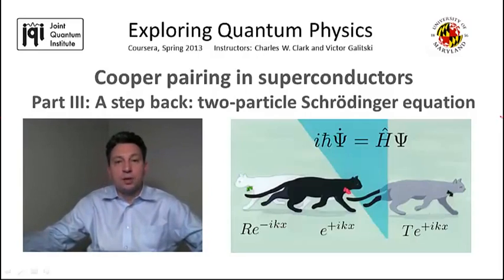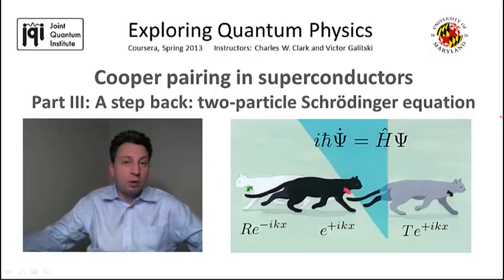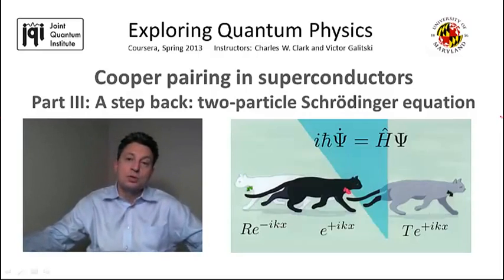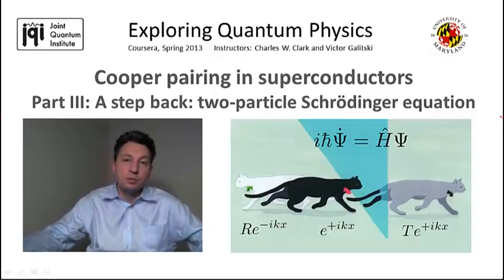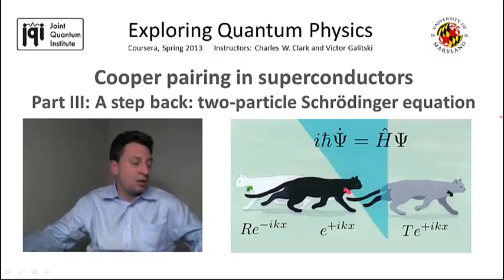It turns out that two-particle problems in quantum mechanics oftentimes reduce to single-particle problems. In this segment I'm going to illustrate exactly how that happens.